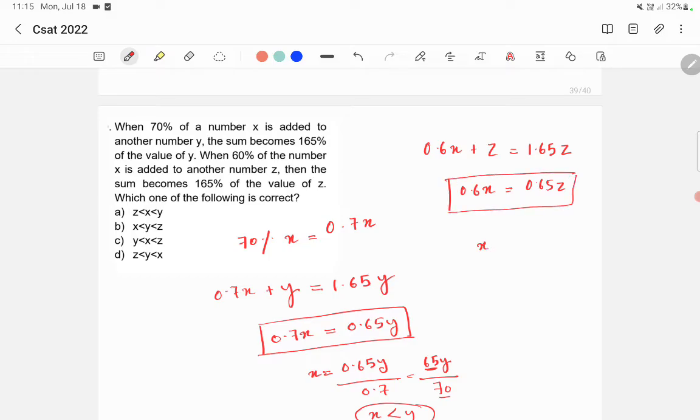From here, I can write x is equal to 0.65z divided by 0.6, which is equal to 65z by 60. Here, 65 by 60 is greater than 1, right? 65 is a bigger number. So 65 by 60 is greater than 1. That means x is greater than z.